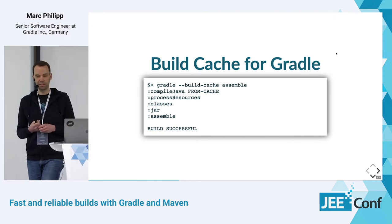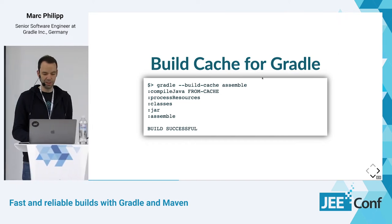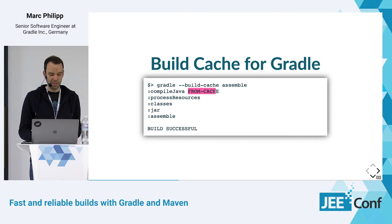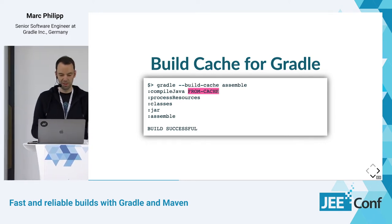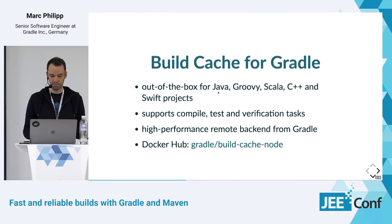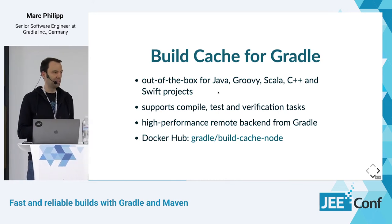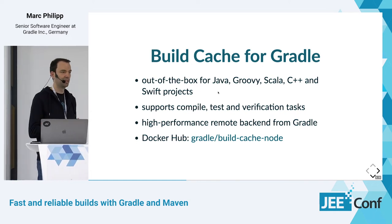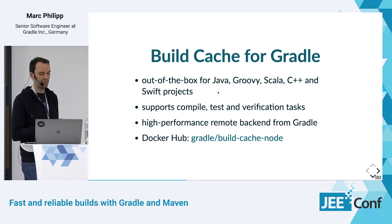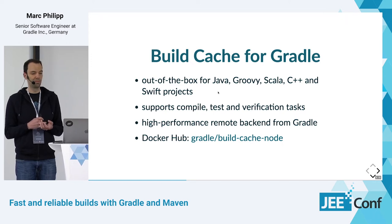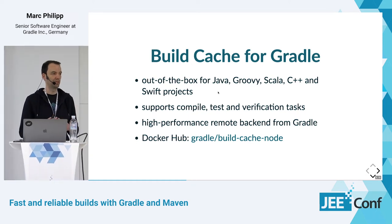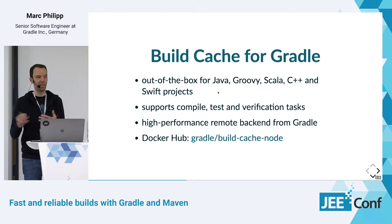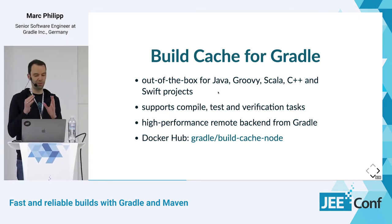How do you use it? The build cache for Gradle is built into Gradle and free to use. All you need to do is pass '--build-cache' to the build, which enables the local build cache on your machine. It works out of the box for Java, Groovy, Scala, C++, and Swift projects, and supports caching of the most crucial tasks like compilation, testing, and verification. We also provide a high-performance remote backend, and there's a public Docker image you can use to set up your own remote build cache node to share cache entries across machines, developers, and CI and local builds.